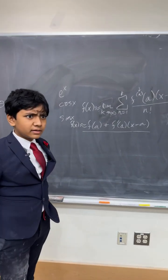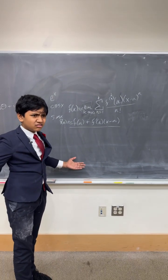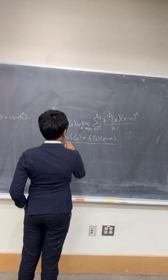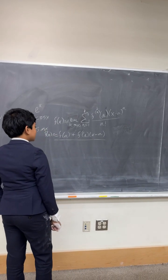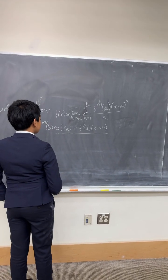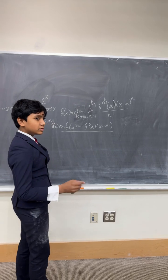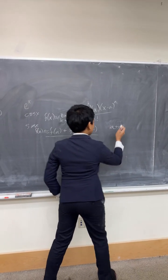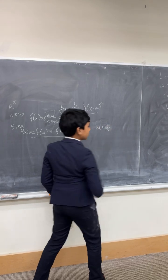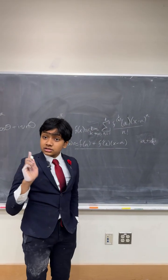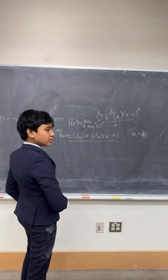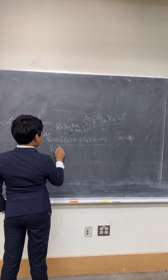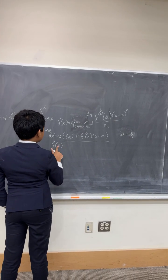So, f of a plus h is approximately f of a plus h times f prime of a. Now, what does this mean? It means that this relies on the assumption that in the neighborhood between a minus h and a plus h, the function can be approximated by a line — that is, the derivative is pretty much constant.